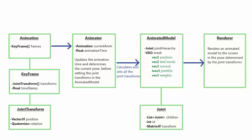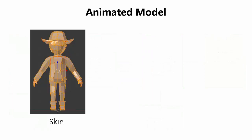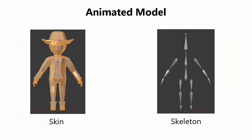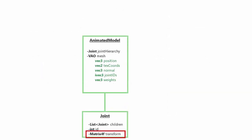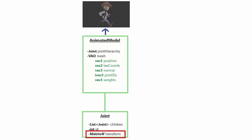Just a quick reminder of what these parts of the system do. An animated model is made up of two things: the skin and the skeleton. The skeleton is made up of a load of joints arranged in a hierarchy. Each joint has a transform which determines the current position and rotation of the joint, and by setting the transforms of the joints in the skeleton we can set the current pose of the animated model.